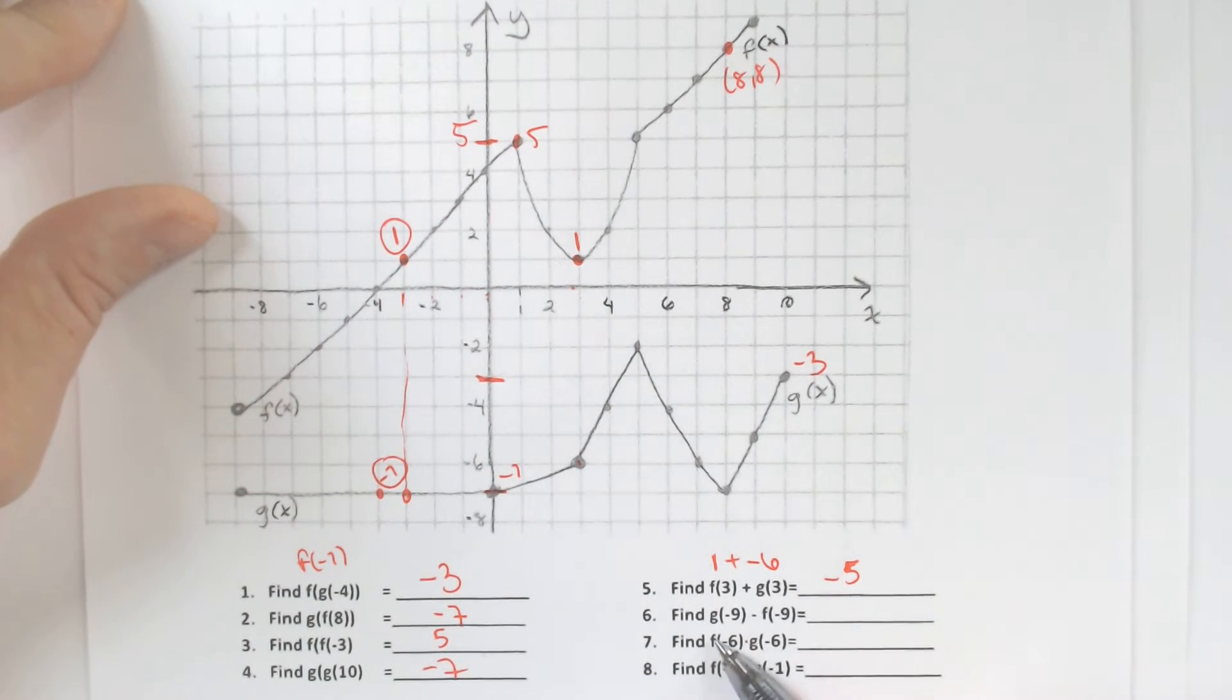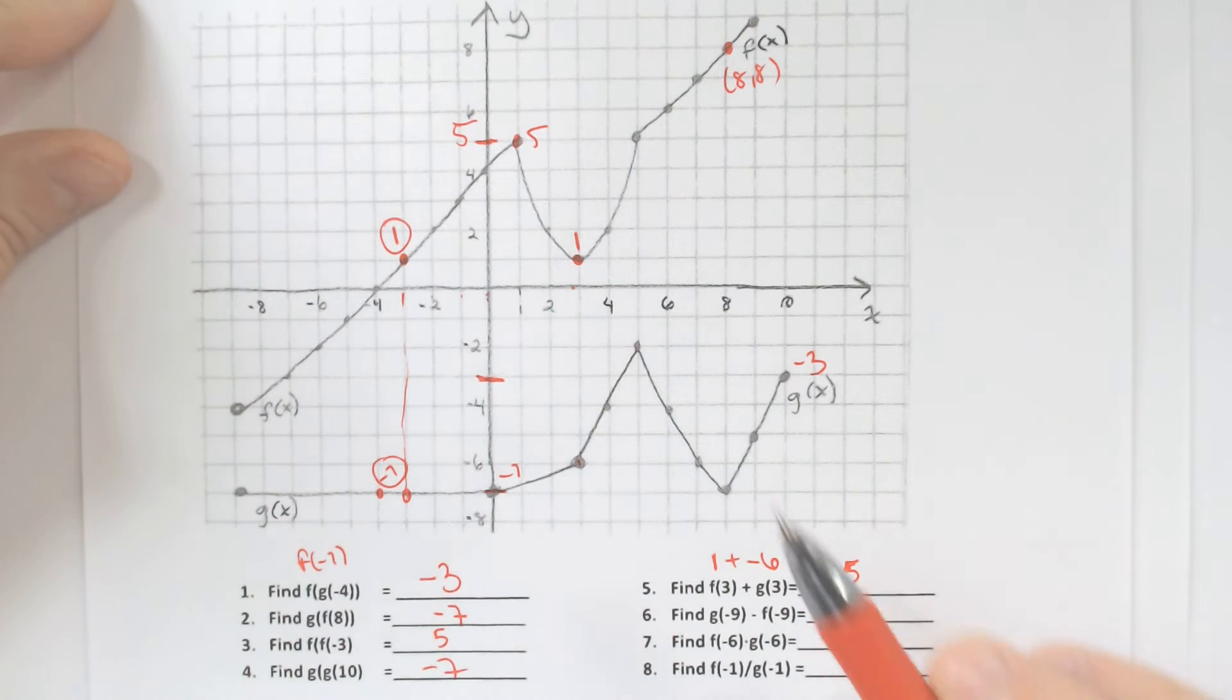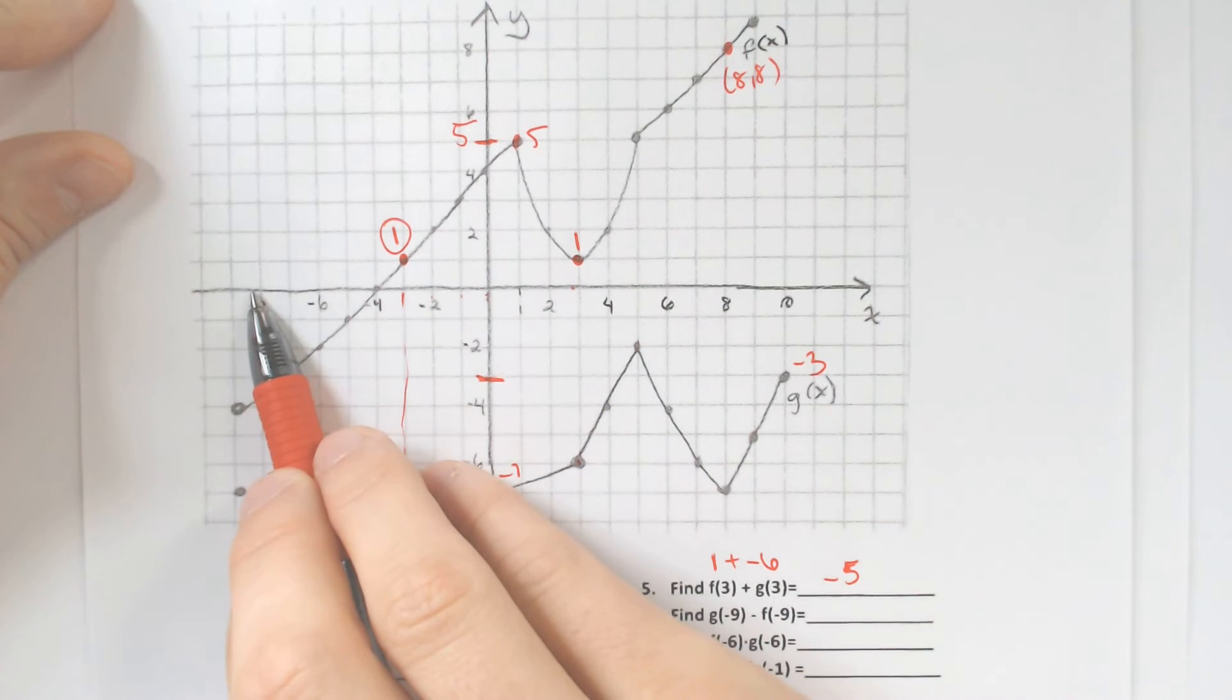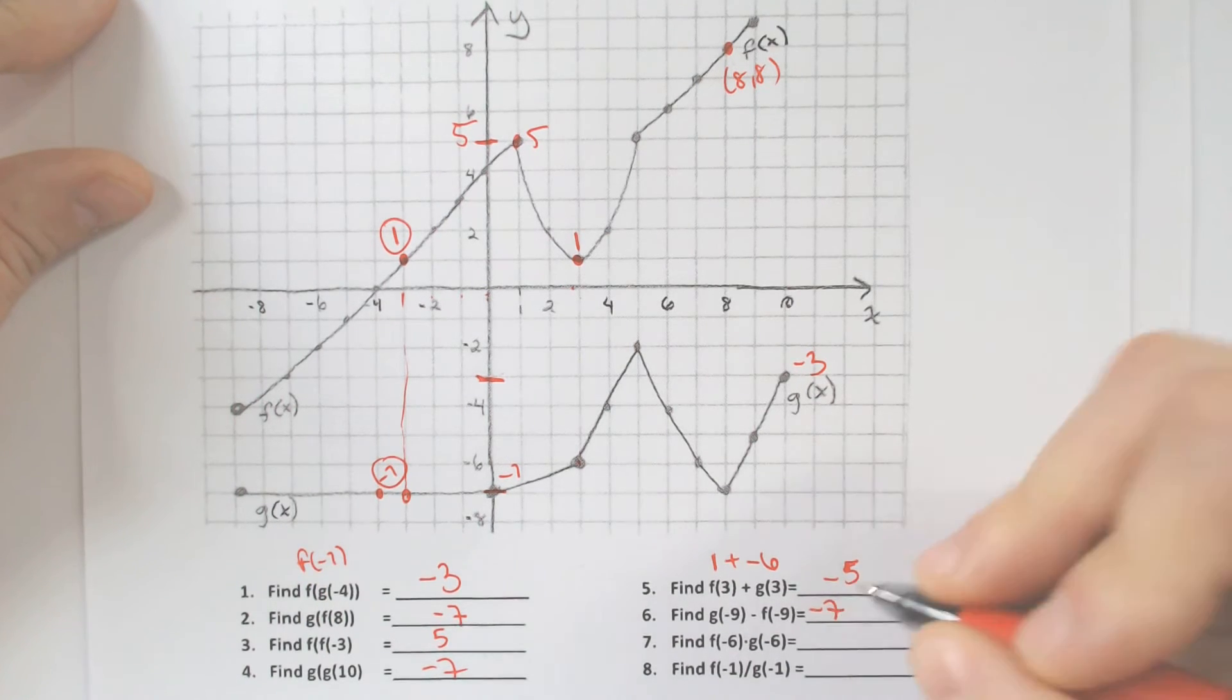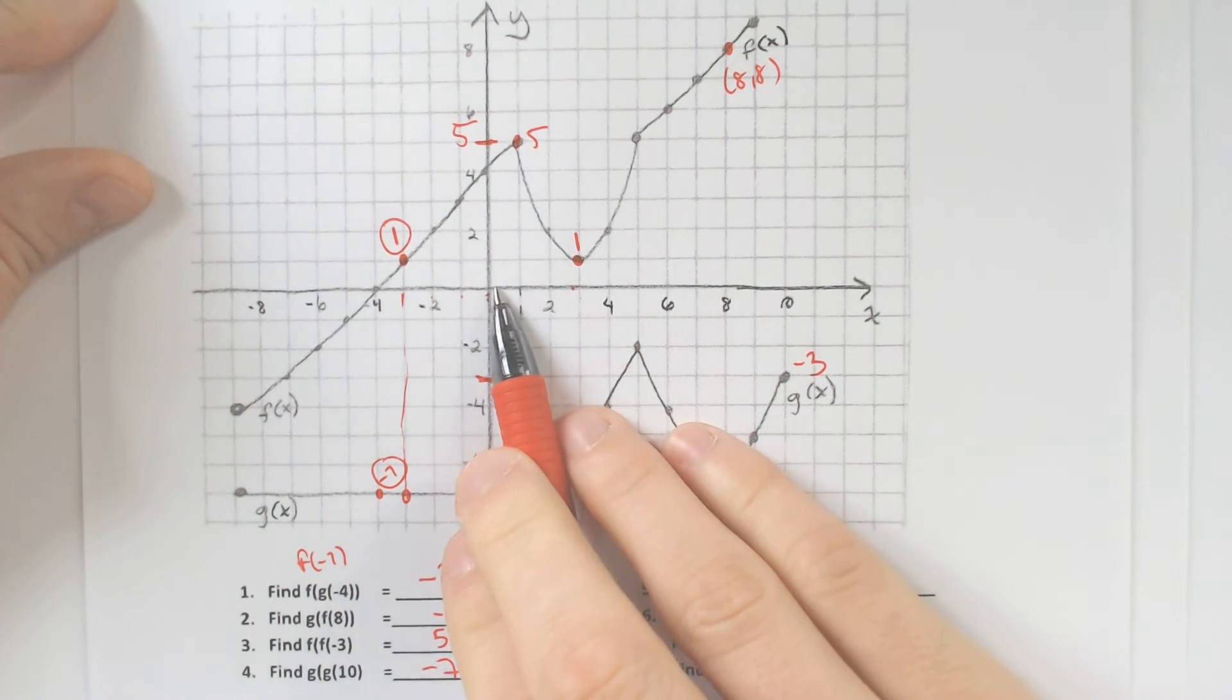Then we have g of negative 9 minus f of negative 9. So g of negative 9 will be to the left by 9, and we are at negative 7 again minus f of negative 9.